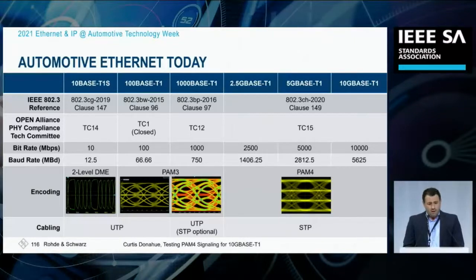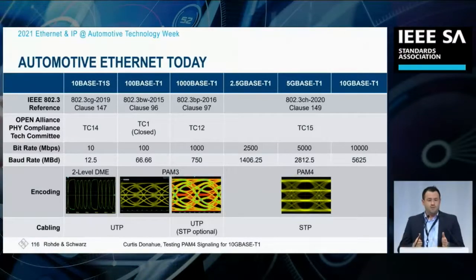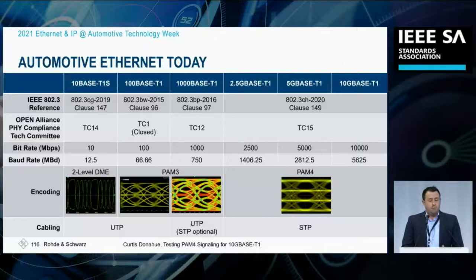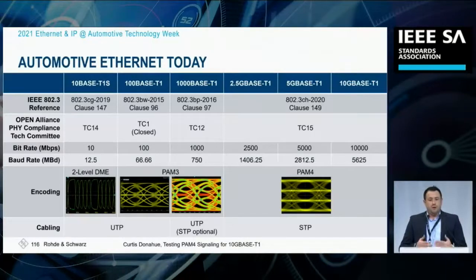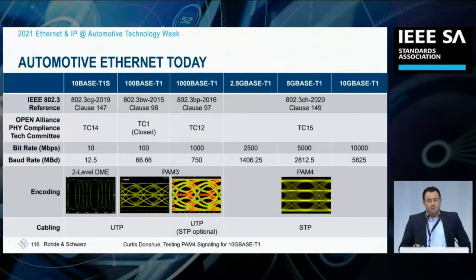One thing I'd like to point out is that because of the jump in bandwidth requirements from each of the technologies — specifically from 1000Base T1, which had a baud rate of 750 megabaud or a Nyquist rate of 375 megahertz, going up to 5.6 gigabaud for 10GBase T1 — it requires new equipment. The higher bandwidth requirements typically justify needing new oscilloscopes and new network analyzers, which gets brought up in the test setups I'll be describing.